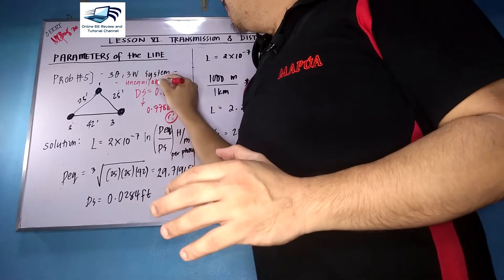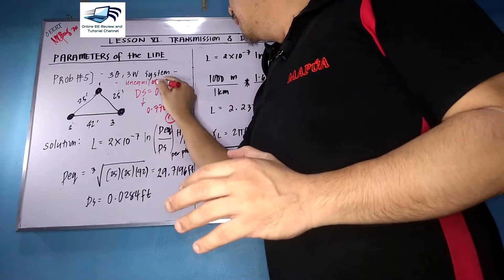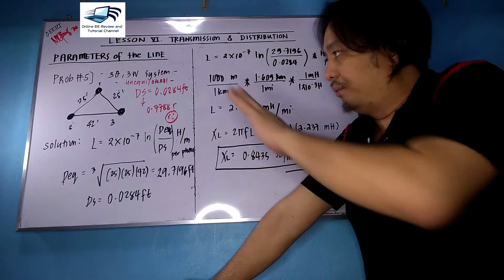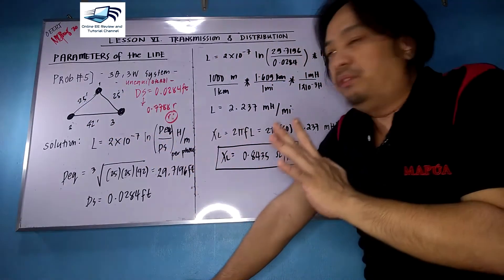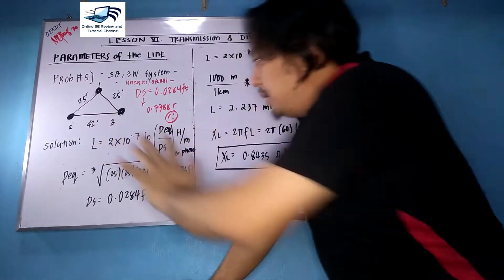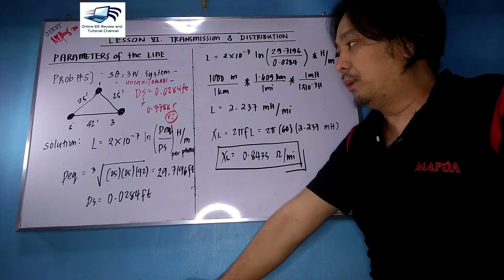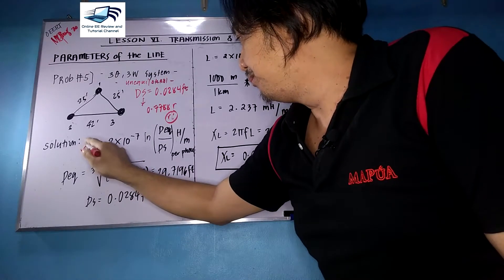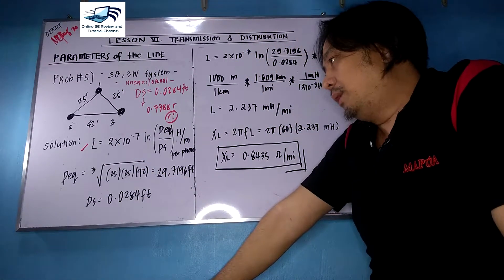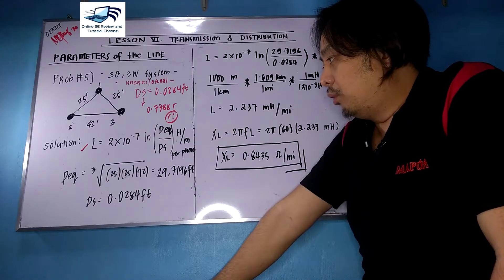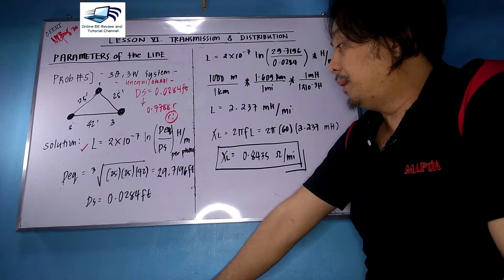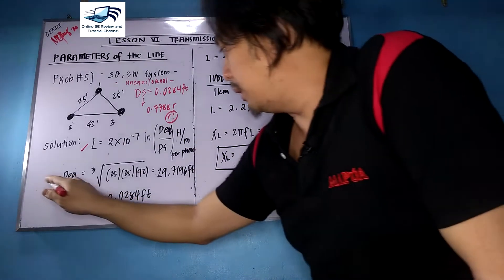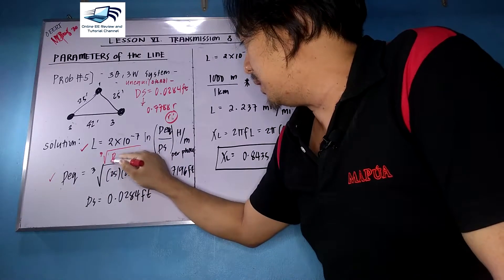The transmission line has unequilateral spacing, meaning the distances between the three conductors are not all equal. Two distances are 25 feet, and the third — between conductors two and three — is 42 feet. The formula is L equals 2 times 10⁻⁷ times ln(D_eq over DS), in henry per meter per phase.